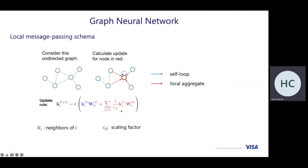In mathematical terms, the message passing schema has two components. The first component is the self-loop information, which preserves the original features. We also aggregate messages from the neighborhood. Both types of information can be transformed by weight matrices and combined with nonlinear activation functions. This is the local message passing schema for GNN.